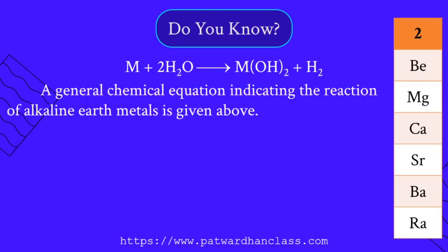This is the general chemical equation representing the reaction of alkaline earth metals. They are called alkaline earth metals because the compounds of many of these elements are found in the earth, so they are known as alkaline earth metals.